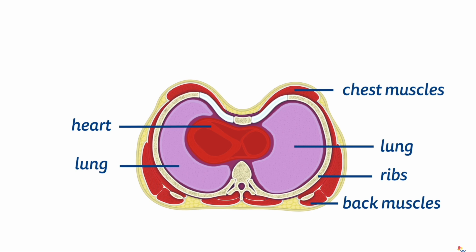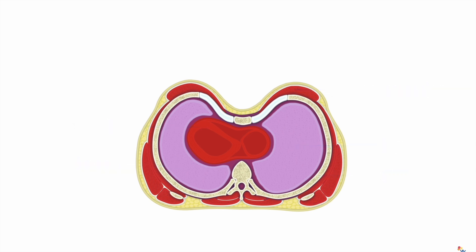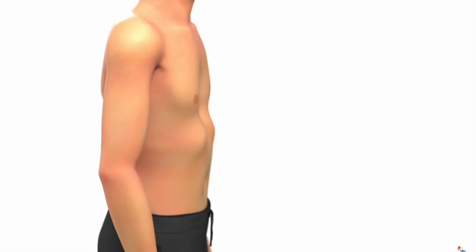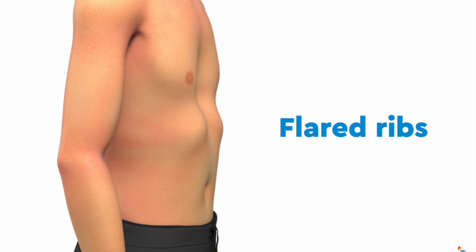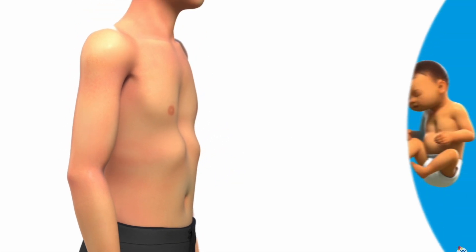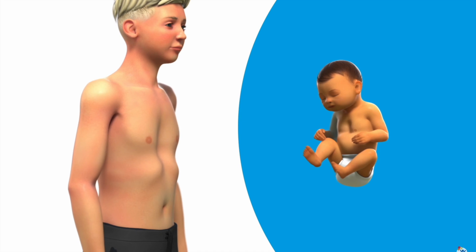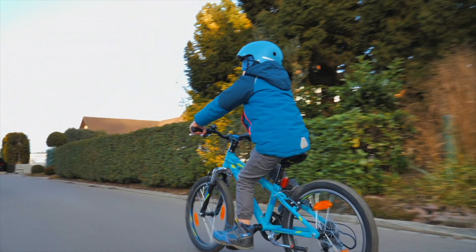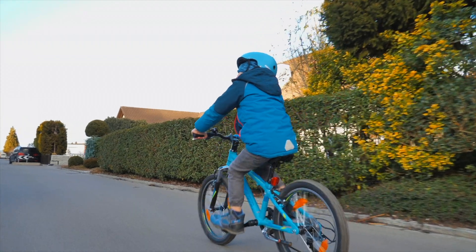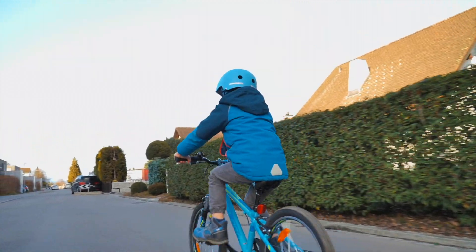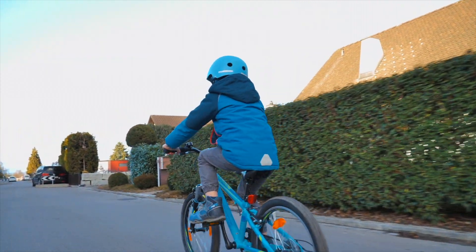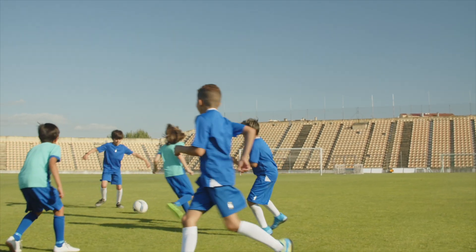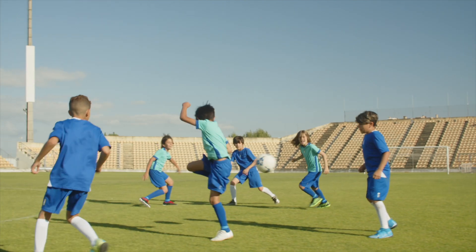In some rare cases, pectus excavatum worsens with puberty and leads to more serious complications, resulting in 2% of PE patients having congenital cardiac diseases. For these particular cases, symptoms include shortness of breath, loss of endurance, chest pains, and irregular heartbeats, with the most common complaint from patients being their inability to perform physical activities, i.e. having exercise intolerance.